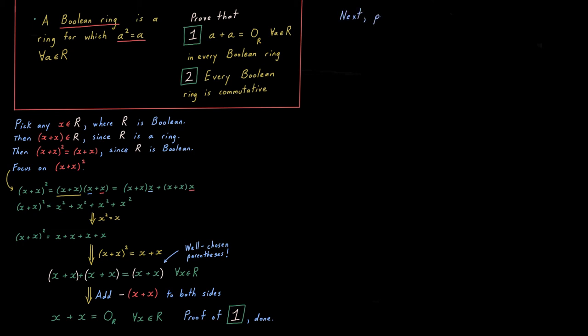And we're actually going to use statement number one in our proof of statement number two now, that every Boolean ring is commutative. First, pick any pair of elements from our ring, call them X and Y. Then we know that due to additive closure, X plus Y is in R, and due to the definition of a Boolean ring, X plus Y, the entire thing squared, has to be X plus Y.